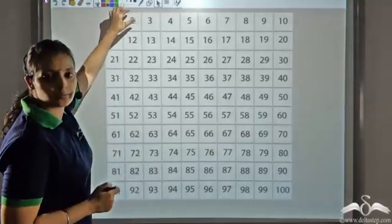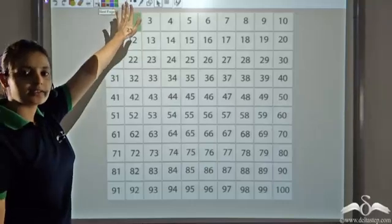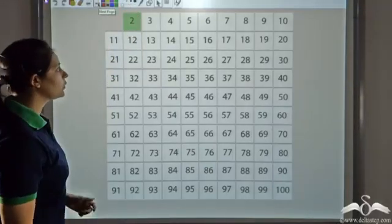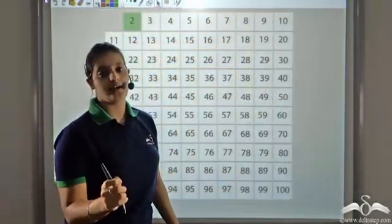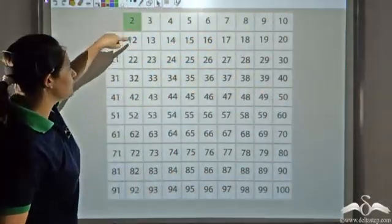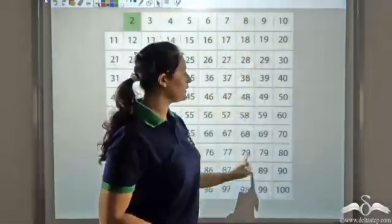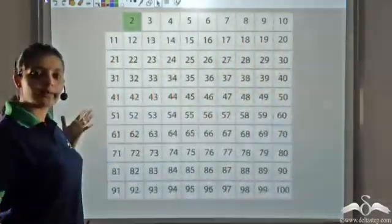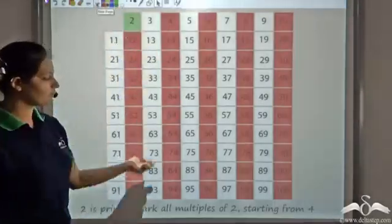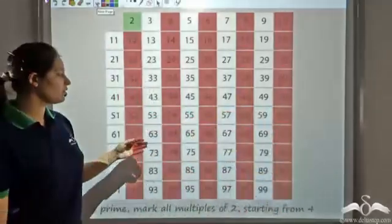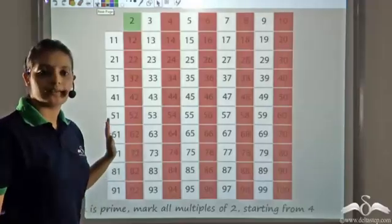We start with the number 2. We say that 2 is prime — it is the first number we start with. Now we eliminate all numbers that have 2 as a factor, that is, any number ending in 4, 6, 8, or 0 is divisible by 2. So I remove all those numbers. These are shown in red — they all have 2 as a factor, so they are all composite and are removed from my list.